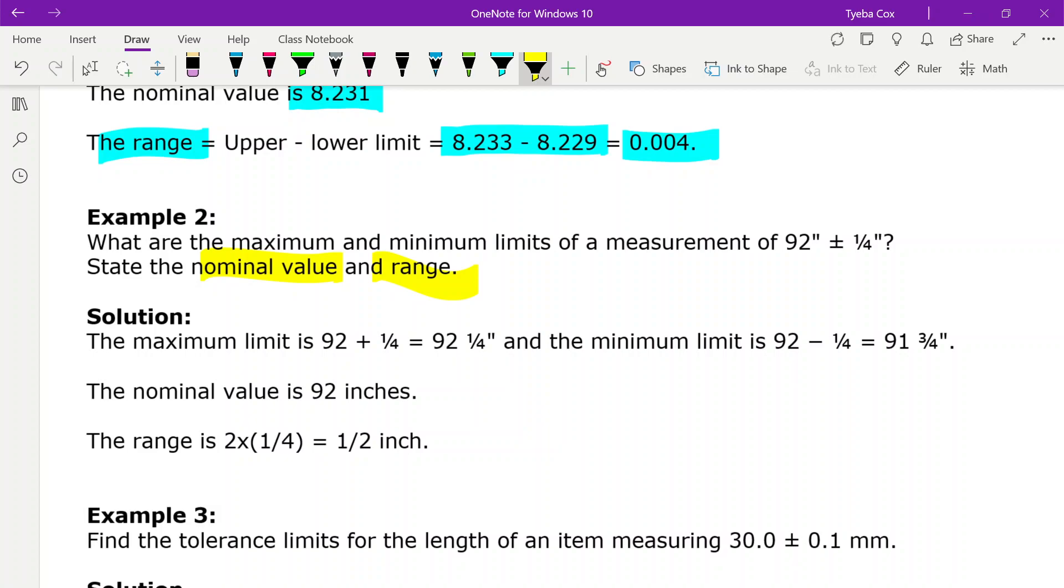So the maximum limit is going to be your 92 inches plus a quarter of an inch. That's going to give you 92 and a quarter of an inch. The minimum limit is going to be your 92 inches minus a quarter of an inch. That's going to be 91 and three quarters of an inch. So your nominal value is your 92 inches. In each case that's your target measurement you want. And the range is going to be two times the plus or minus value right there. So we end up with a half an inch.